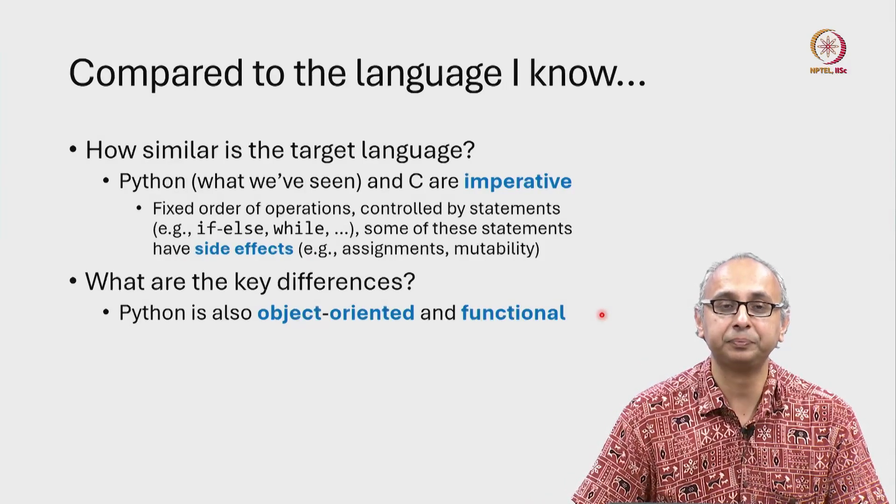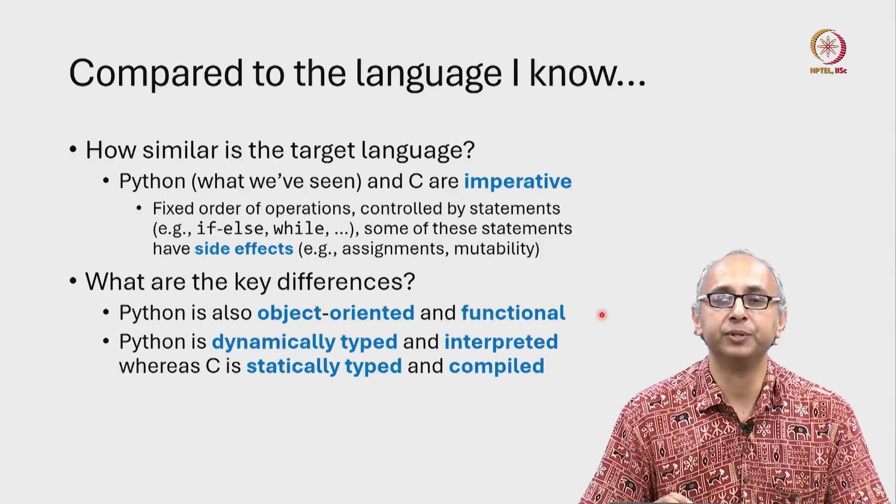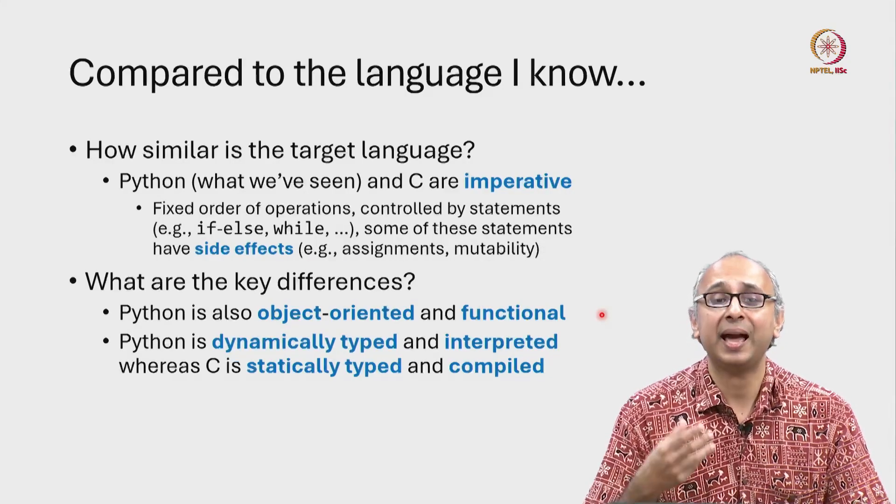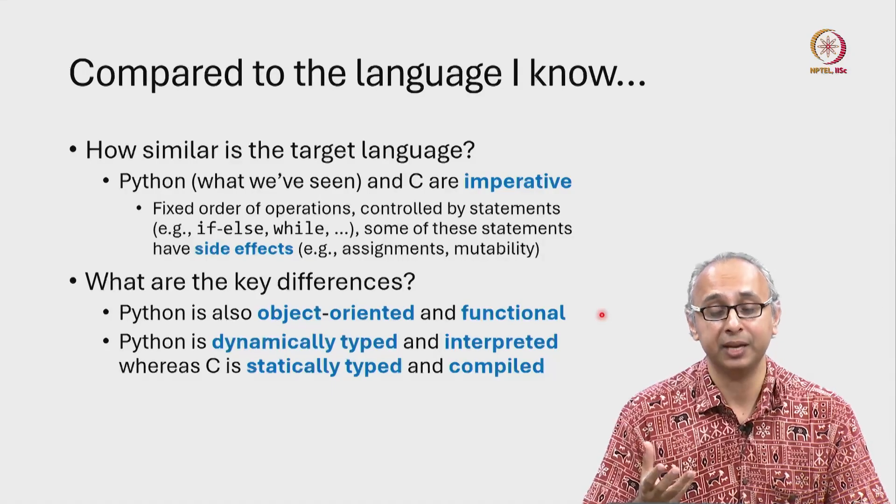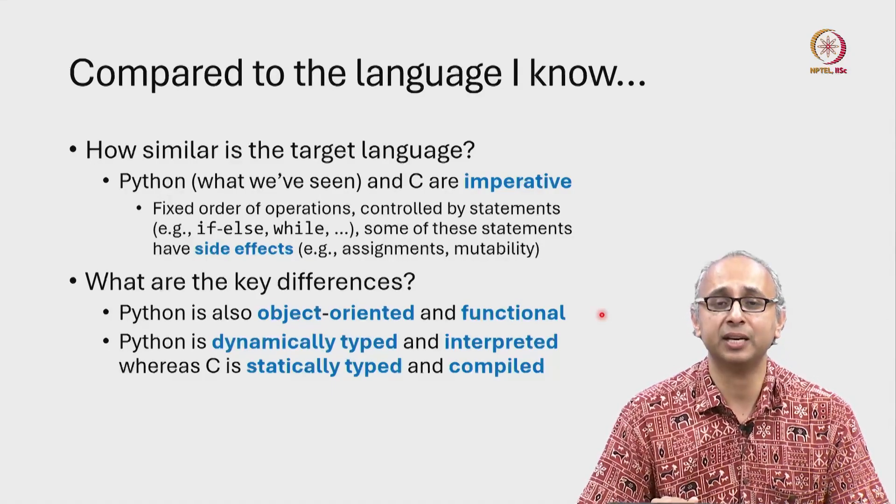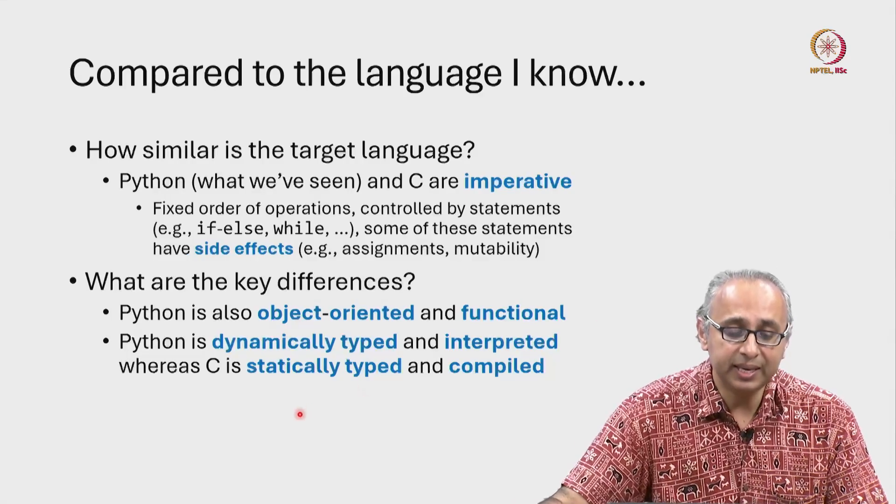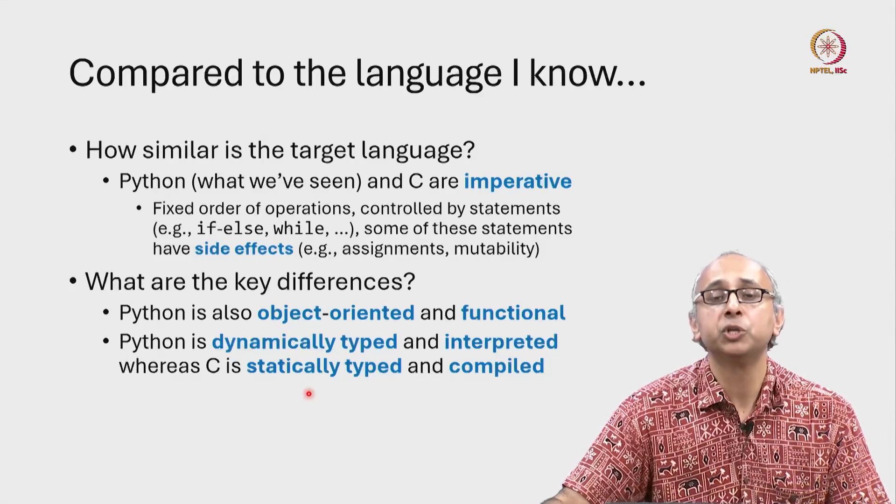Another very important difference is that Python variables are dynamically typed and the language is interpreted. I will explain these terms as we proceed. But in contrast to this, C is statically typed.